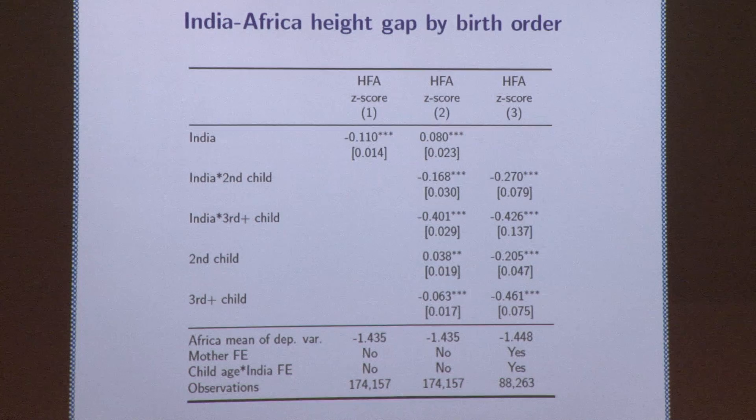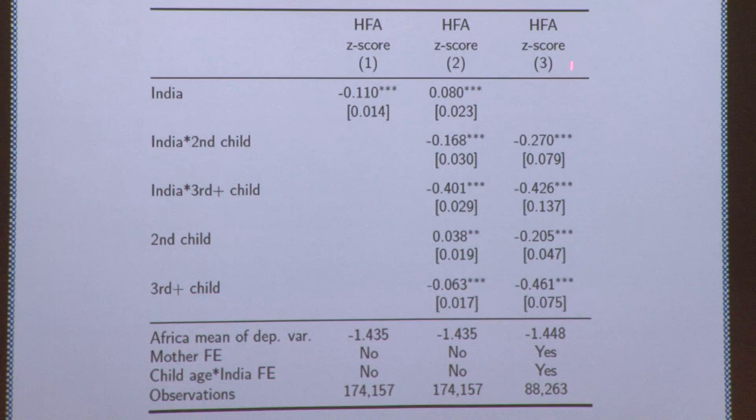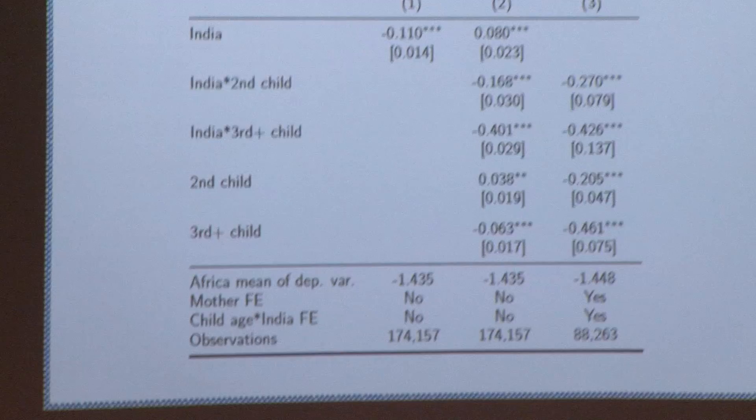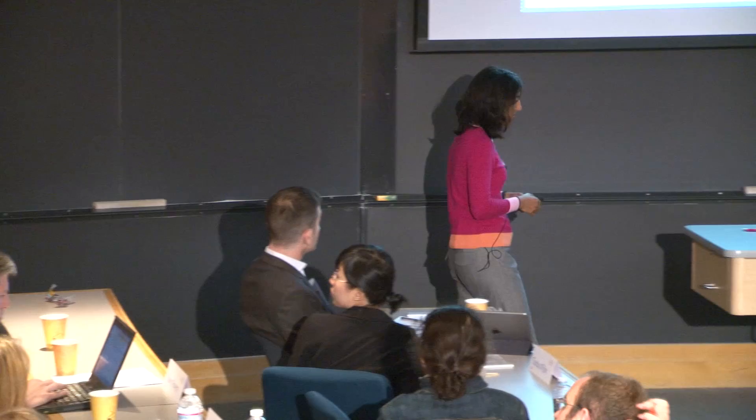Column three has mother fixed effects — we put in a dummy for a sibling pair, comparing either a first-born and second-born observed in the data, or a second-born and third-born. There are very few cases of three kids under five except for multiple births. On the selective mortality point: infant mortality is higher in Africa, so the kids who survive might just be better off. One reason to worry about Indian kids being short is selective mortality — Indian kids are surviving at a higher rate, and so the marginal kids who survive may be shorter. Quantitatively, the literature shows this can't account for these differences.